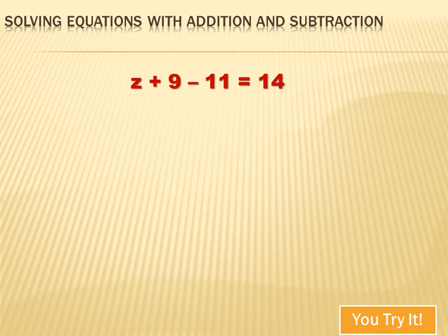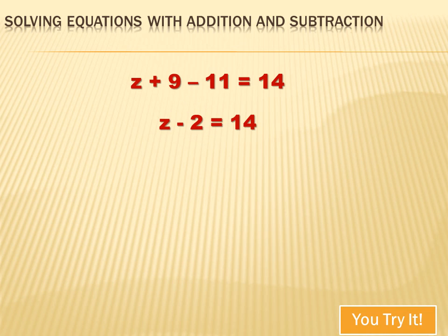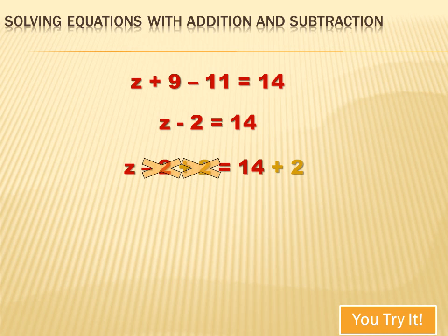We can test that by substituting negative 12 for x in the original equation: negative 12 plus 26 equals 14, or rewritten, 26 minus 12 equals 14. And 26 minus 12 is in fact 14. Now for the next problem: did you get this one? We're trying to solve for z, which means we need to rewrite the equation so z is alone on one side. We can simplify by combining plus 9 minus 11 to get z minus 2 equals 14. Then we add 2 to both sides, and the 2s cancel out, giving us z equals 14 plus 2, which is z equals 16.